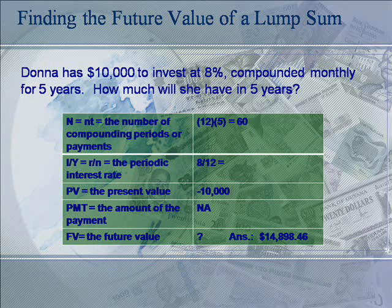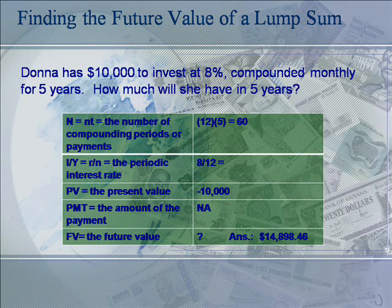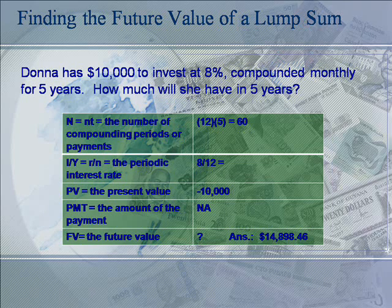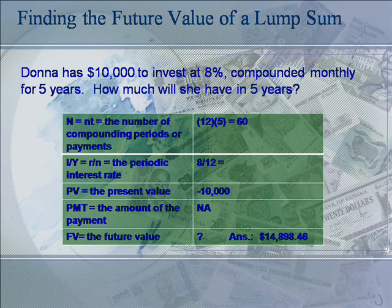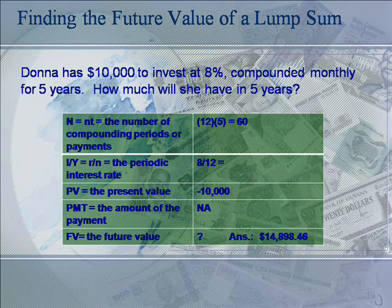Let's do an example where we find the future value of a lump sum. The problem tells us that the investor has $10,000 to invest — that, of course, would be the present value. The variable is entered as a negative because the money is a cash outflow to the investor. Enter this value by typing in $10,000 and pressing the plus-minus key down at the bottom of your calculator, then press PV. The number of periods, capital N, is 60 — because that's five years times 12 months per year.